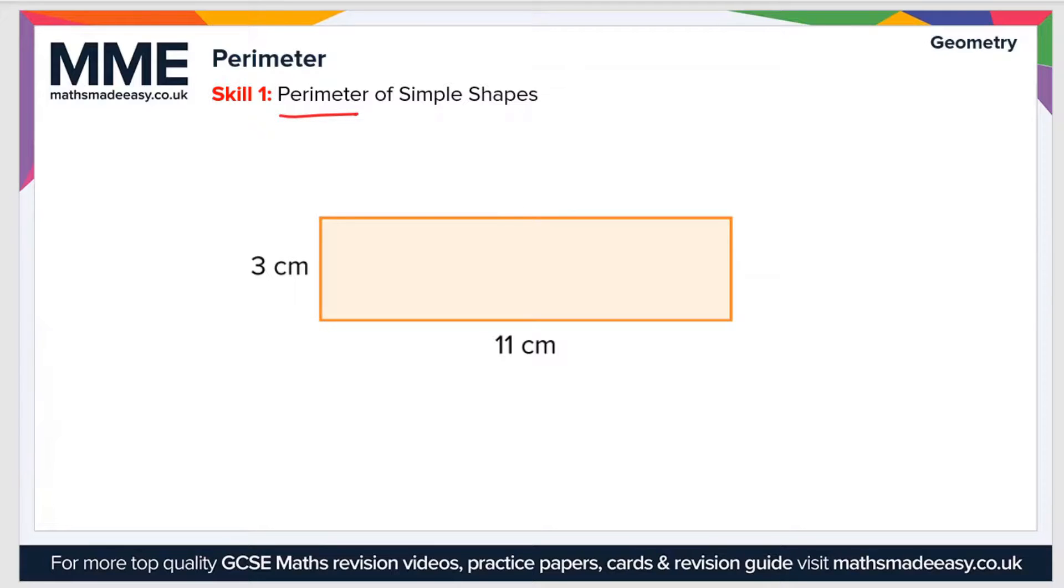So here we have a rectangle with side lengths of 3cm and 11cm. In order to calculate the perimeter, we just need to add the side lengths together. So let's label the other ones. In a rectangle there are two pairs of equal sides, so that means this side is also 11cm and this side is 3cm. So the perimeter is then 11 plus 11 plus 3 plus 3, and that equals 28cm.